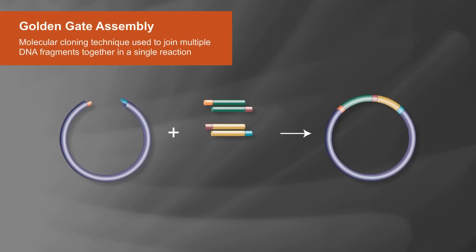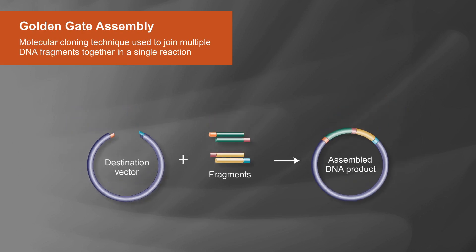Golden Gate Assembly is a molecular cloning technique used to join multiple DNA fragments together in a single reaction.